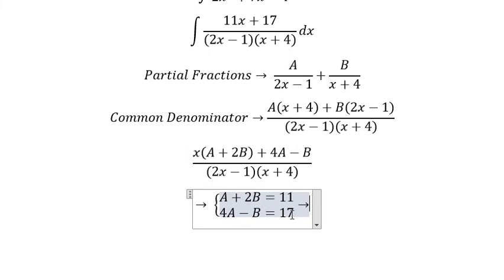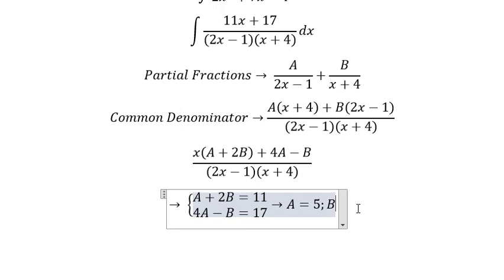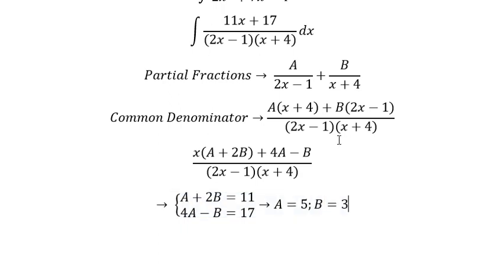And we have the solution of this one. So A should be 5, B should be 3. So we put 5 and 3 here.